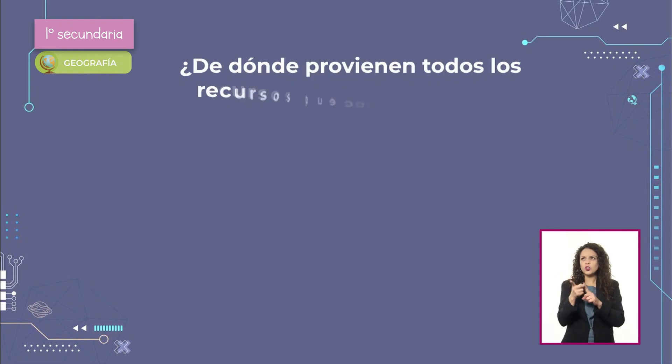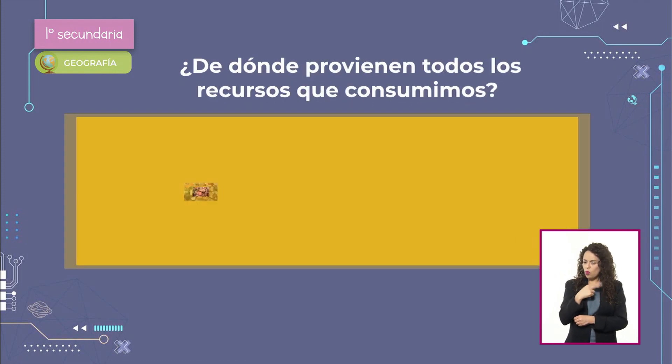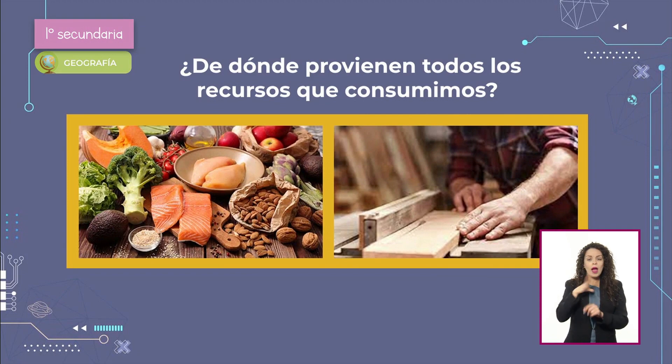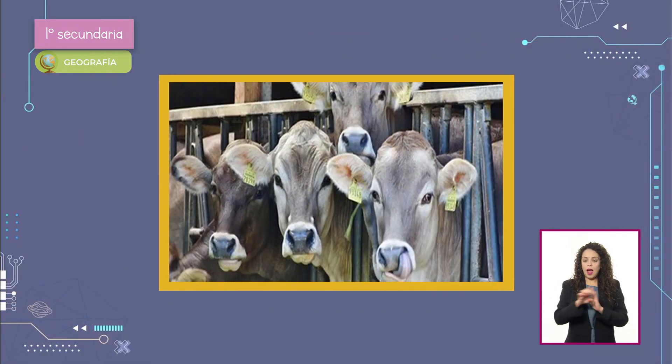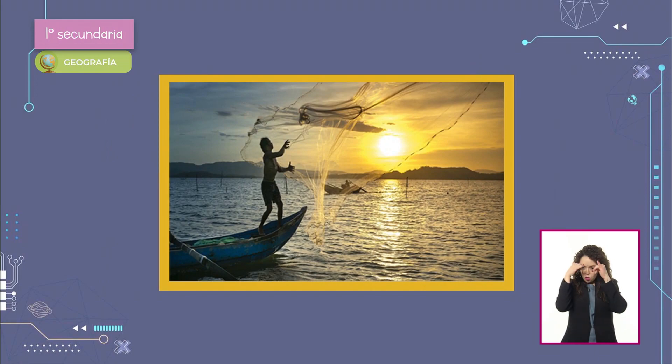Comencemos por hacernos la pregunta: ¿De dónde provienen todos los recursos que consumimos y en qué partes del mundo hay mayor disponibilidad de estos recursos? Cuando se refiere a recursos que consumimos, ¿se refiere, por ejemplo, a las frutas o verduras que provienen del campo? Así es. Me refiero a la extracción de esos recursos naturales de los que se derivan productos.